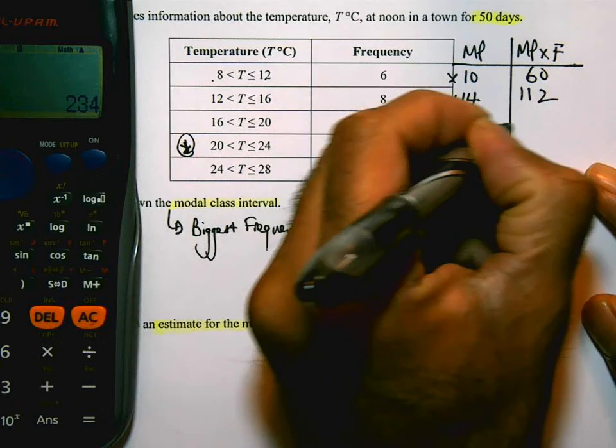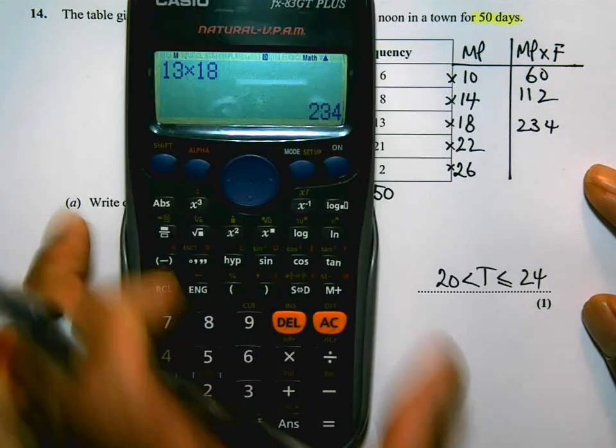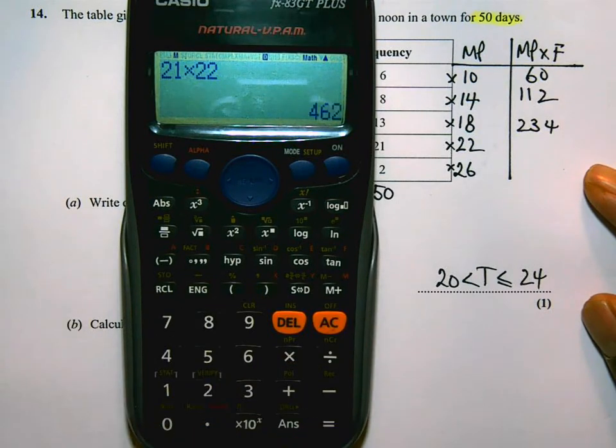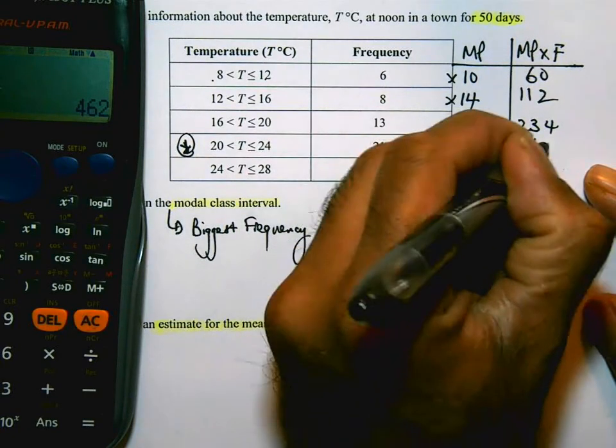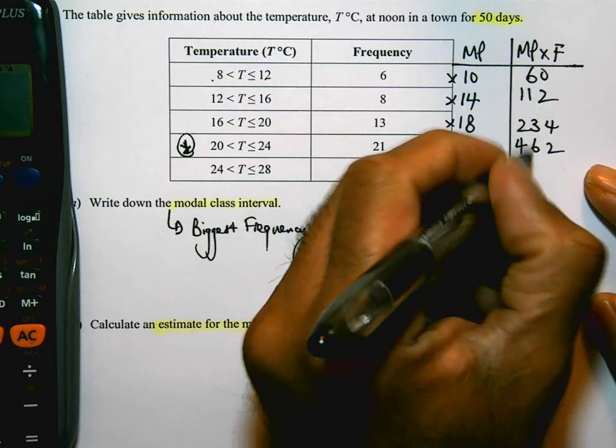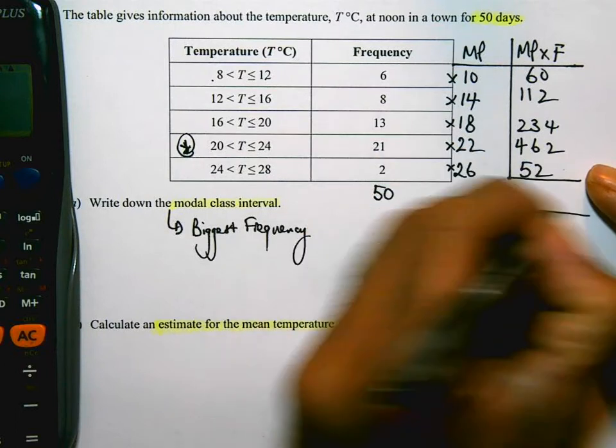And then the next one is 13 times 18 equals 234. The next one, 21 times 22, that's going to be 462. And finally, 2 times 26, I know that's going to be 52. And now, I need to add those values.